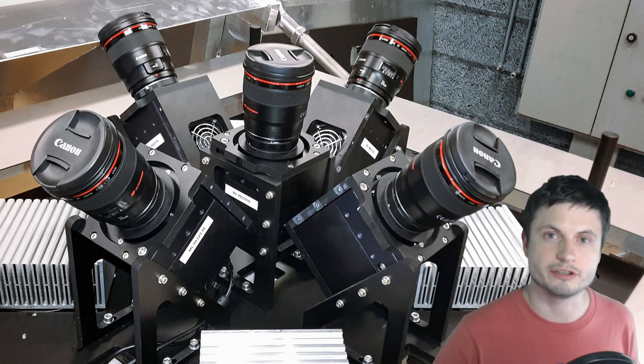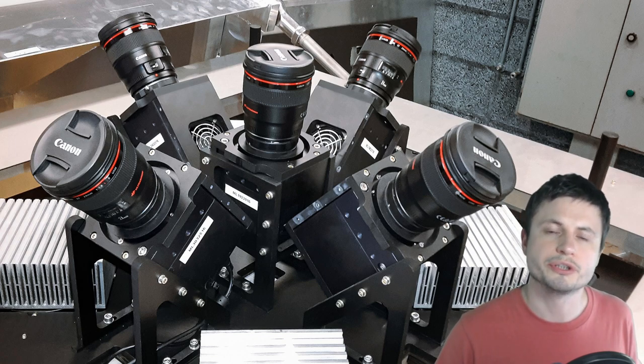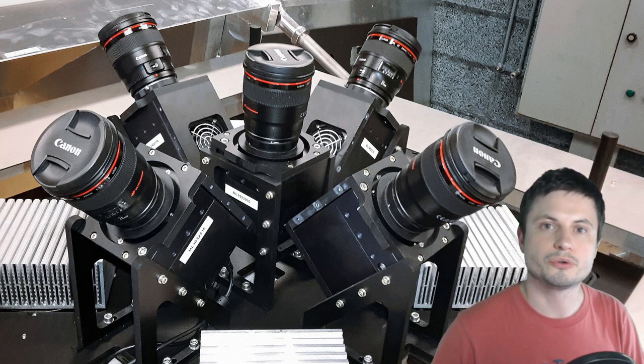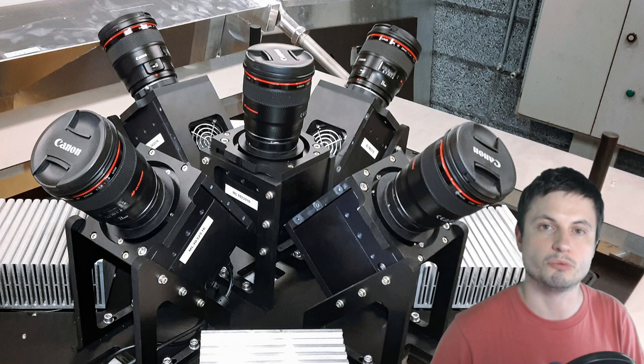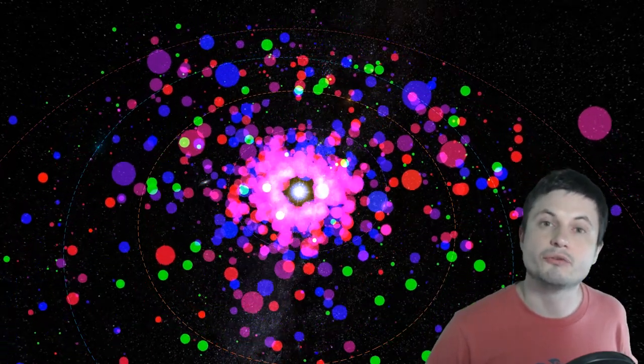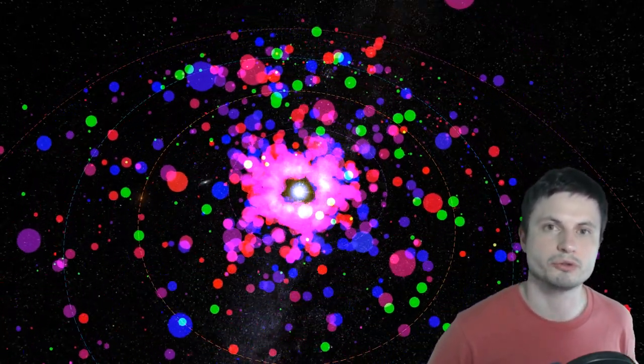And the reason this experiment and this particular device is called Mascara and the planet is known as Mascara 4b is because Mascara is actually an abbreviation or a shortening of the phrase multi-site all-sky camera. And this is a very, very easy to create, very flexible and mobile device that can then be relocated anywhere in the world. The project only started in 2017, and since then it already discovered at least four different exoplanets.